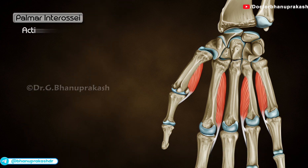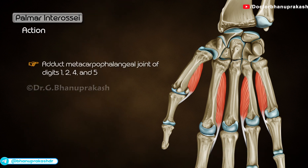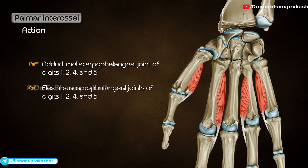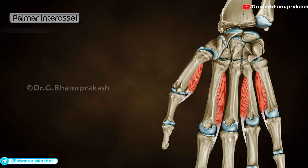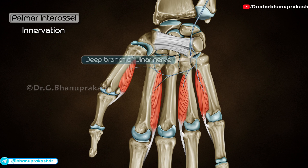The actions are adduction of the metacarpophalangeal joint of digits 1, 2, 4, and 5. Flexion of the metacarpophalangeal joints of digits 1, 2, 4, and 5. Extension of the interphalangeal joints of digits 2, 4, and 5. Innervation is by the deep branch of the ulnar nerve.